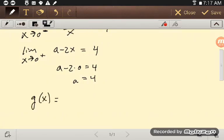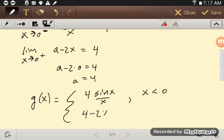And so in order to make this function continuous, I would need to have this be g of x equals 4 sine x over x when x is less than zero, and 4 minus 2x when x is greater than or equal to zero. And so there I've made it continuous.